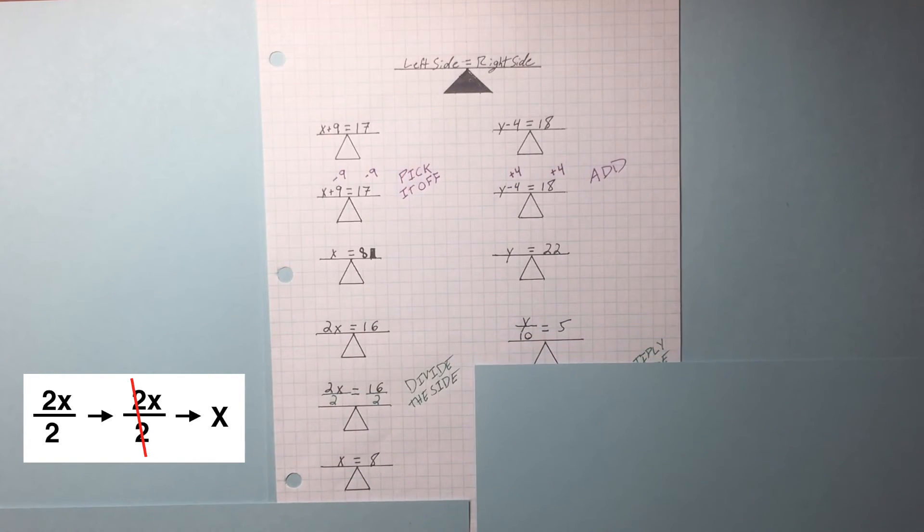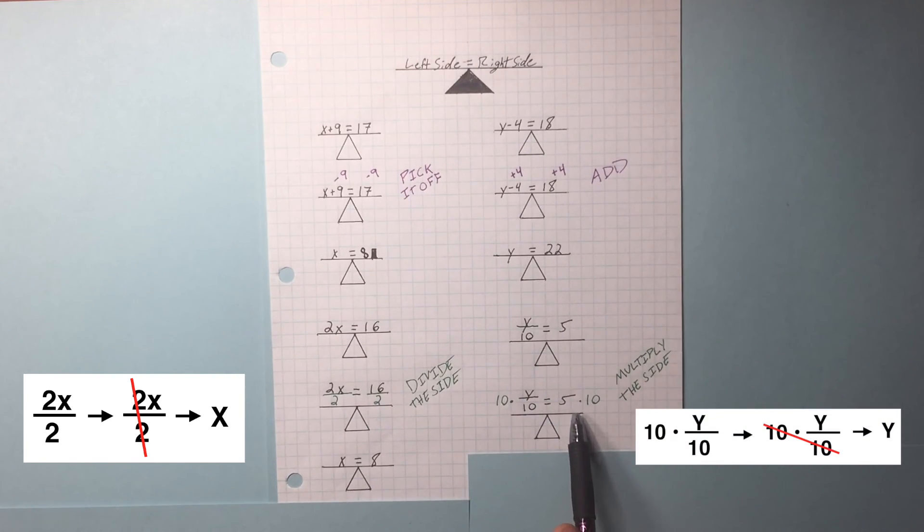Y divided by 10 equals 5. We need to get rid of this denominator. And what is the opposite of divided by 10? Multiply by 10. Left and right side. This 10 and this 10 they cross out and we're left with a Y. Do our multiplication on this side. Y equals 50.